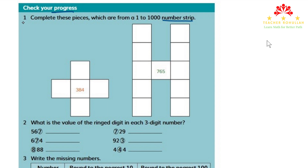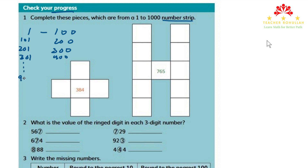You know about the numbers 1 to 1000 strip, where we can place 1 to 100, then 101 to 200, 201 to 300, 301 to 400, and continuing down to 901 to 1000.